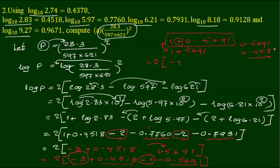The number is 0.3. 8 minus 1 equals 7. 6 minus 5 equals 1. 5 minus 4 equals 1 equals 0. So it's minus 0.1173.